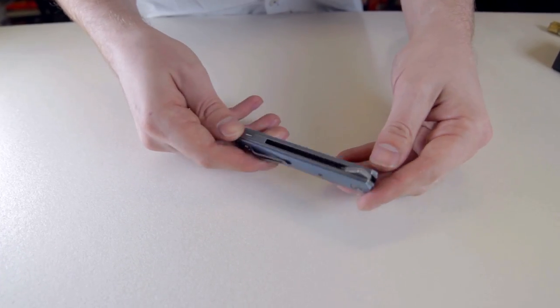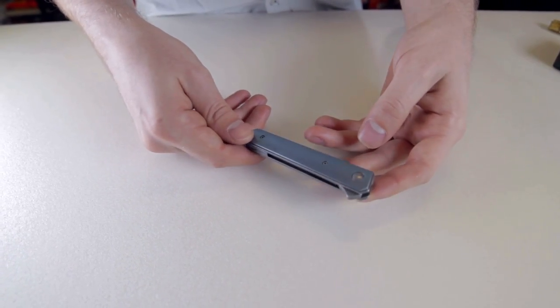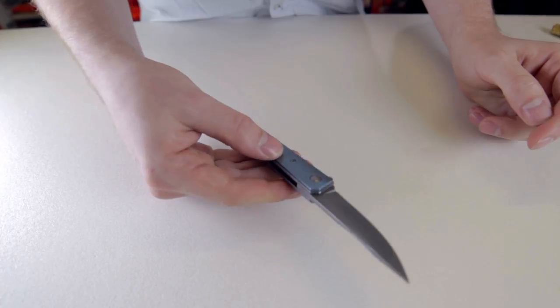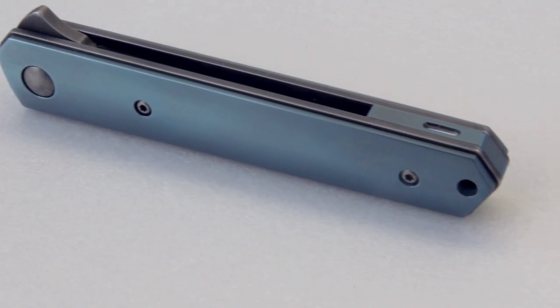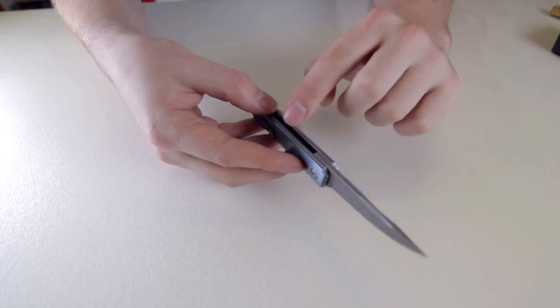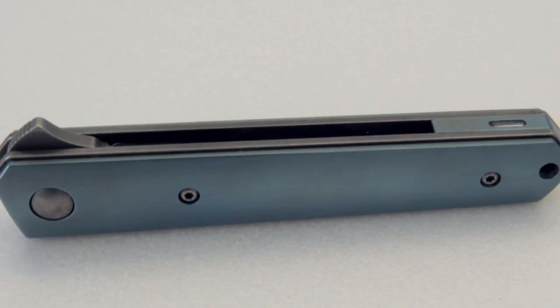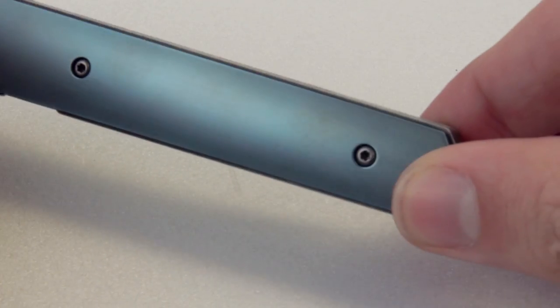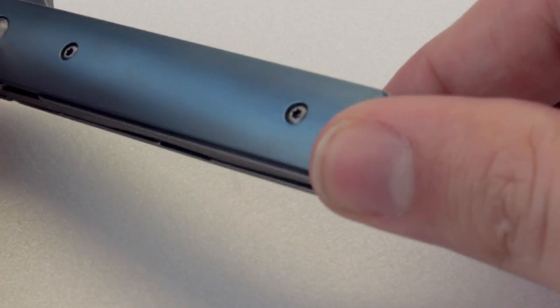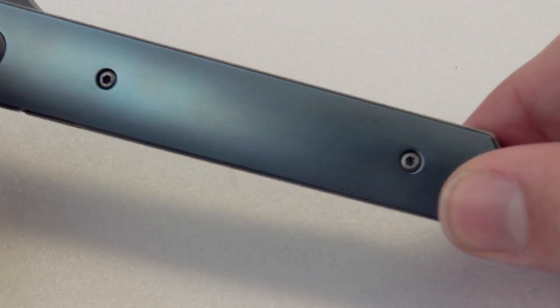Mint. So this is my customized Boker Mini Kwaiken. And it's not what I asked for, but it's exactly what I wanted. The details of what's been done. The blade and the inner scales have been stonewashed and then acid etched. And then the titanium main scales have been electro-anodized to this sort of grey blue.